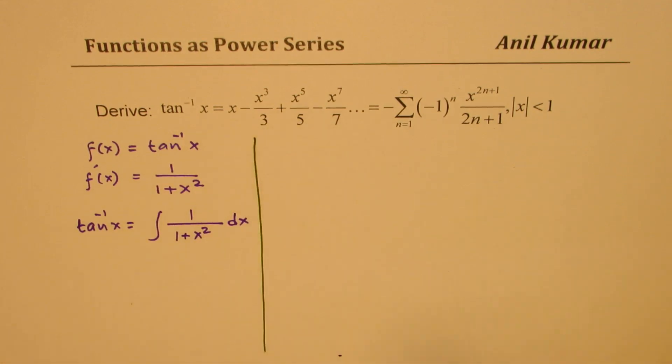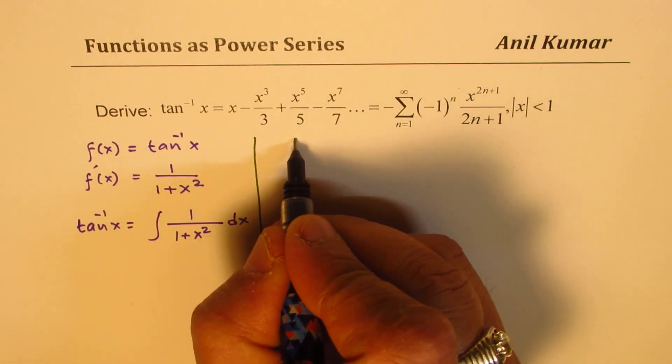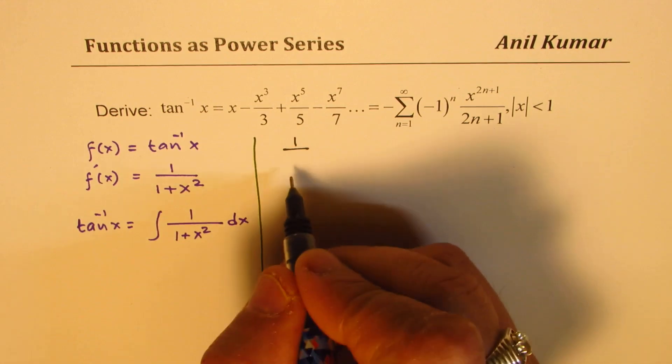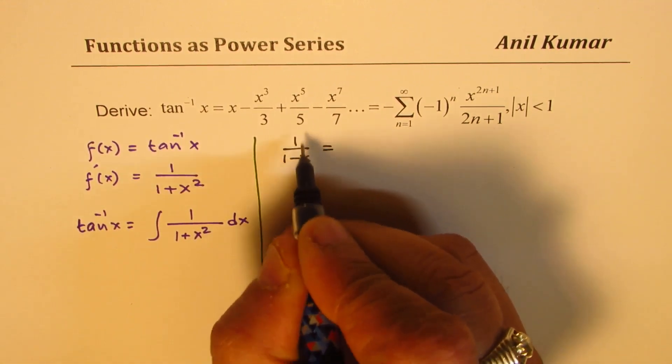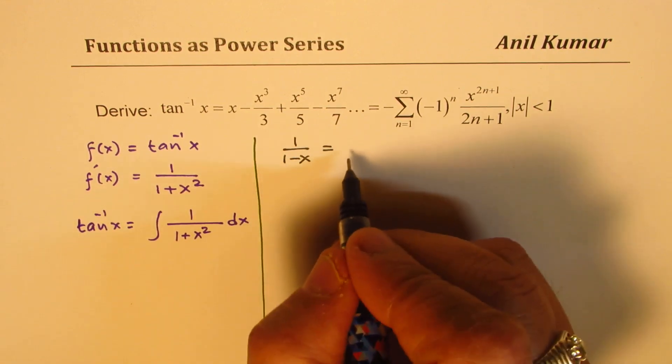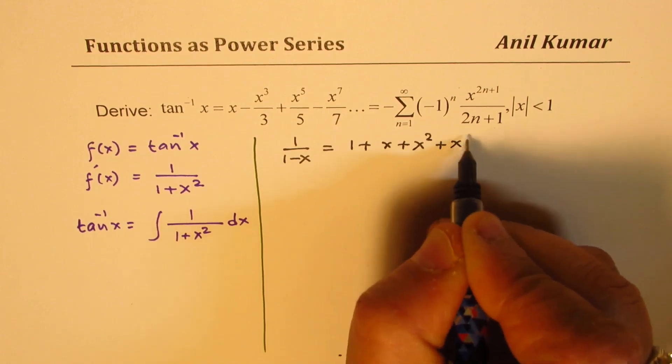So in short, let me repeat. We started with a very simple equation which was a geometric series, and it boiled down to one over one minus x, and the series was one plus x plus x squared plus x cubed plus x to the power of four and so on, where x value is between plus and minus one.